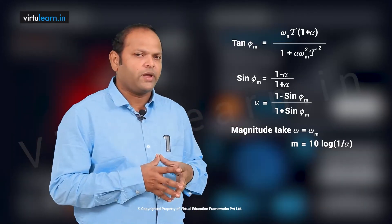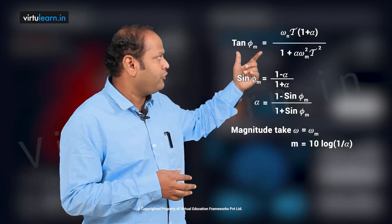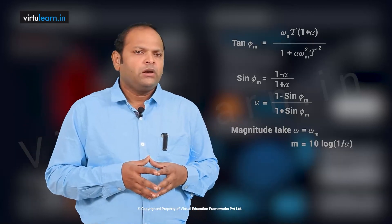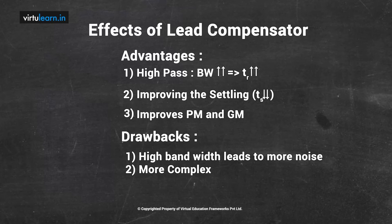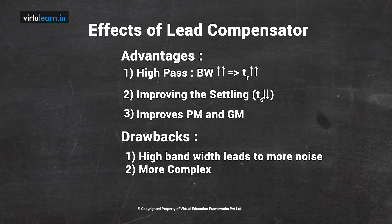The magnitude at ωm can also be derived by substituting ω = ωm into the magnitude expression, giving 10·log(1/α). Regarding effects of the lead compensator: it acts as a high-pass filter, so the system bandwidth increases, which also increases the rise time. It gives improved transient response, better damping, reduced settling time, and improved phase margin and gain margin — meaning relative stability increases. The lead compensator is analogous to a PD controller.